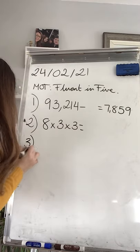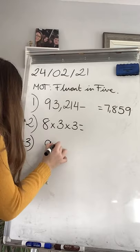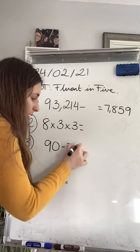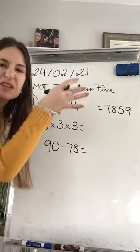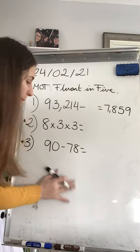I'm just going to go for exercise 3. Mentally, can you try to do 90 take away 78? You shouldn't be doing it on a column method, I think that you should be able to do it by head.